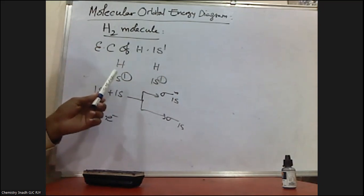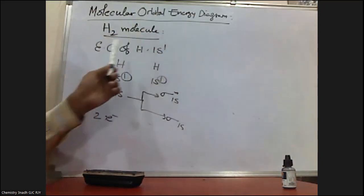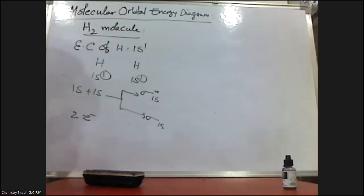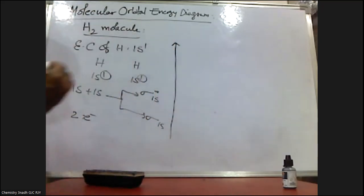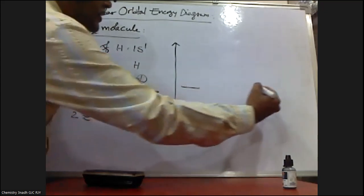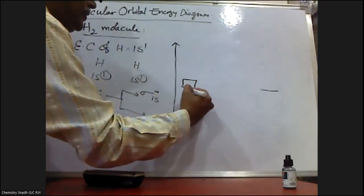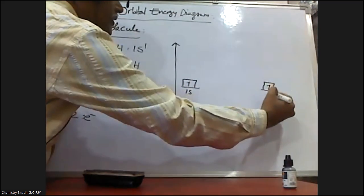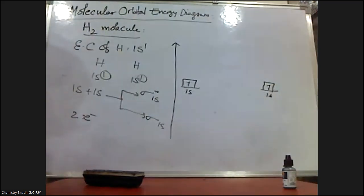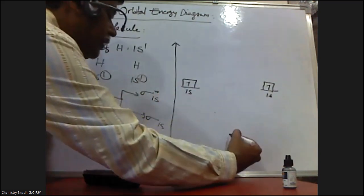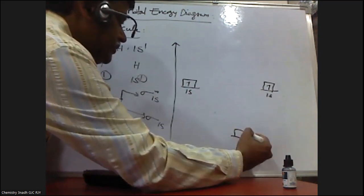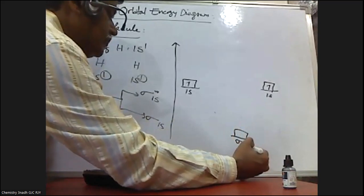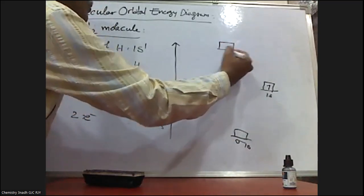Now let me discuss how to draw the molecular orbital energy diagram for the H₂ molecule. First, let us draw the energy axis. This corresponds to the energy. These are the atomic orbitals of hydrogen — this is the 1s orbital with one electron, and this is another 1s orbital of the second hydrogen atom. The bonding molecular orbital has lower energy than the corresponding atomic orbitals. This is the sigma 1s and this is the sigma* 1s.